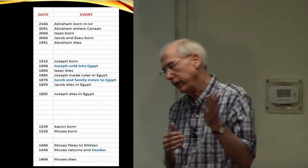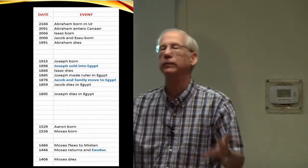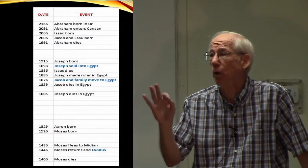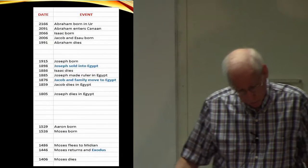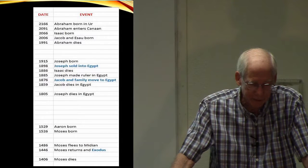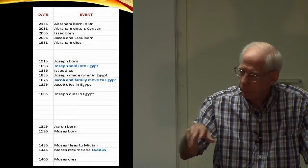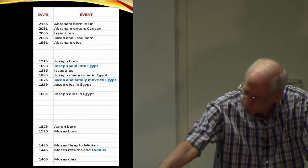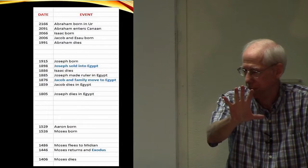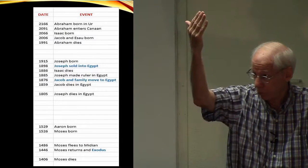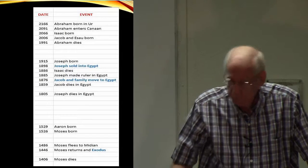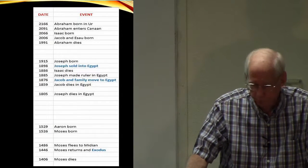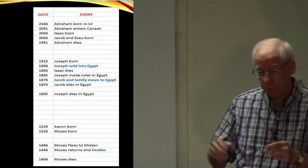The first section I want to look at is from Abraham, born in 2166 B.C., down to Jacob's going into Egypt in 1876. The Old Testament refers to two different groups as Hittites: one group settled in Palestine prior to Abraham's arrival, particularly around Hebron — descendants of Canaan through Heth — and another group whose kingdom centered in modern Turkey and extended into Syria. The first group is mentioned in Genesis 15; the second in Joshua 1:4 and later texts.